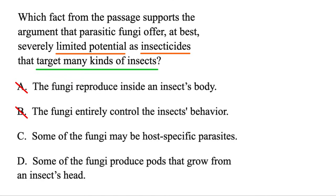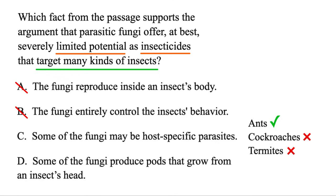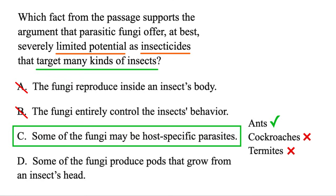Option C: some of the fungi may be host-specific parasites. If it's host-specific, it may only go after one type of thing, like ants, but not after many things like cockroaches or termites. So if it's host-specific, that does have limited potential — and this is the correct answer. Often if you just try to do it based on logic, you can find the right answer without having read the full passage.